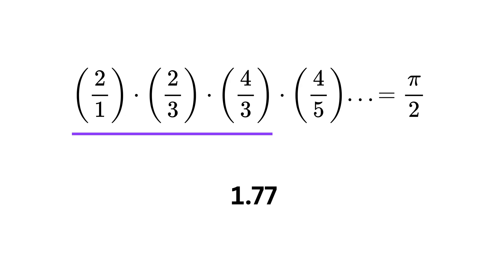Which is almost 1.77. Then multiply it with the next ratio 4 over 5 to get 64 over 45, which is almost 1.42. If you keep doing this again and again, the value will slowly settle down towards pi by 2.